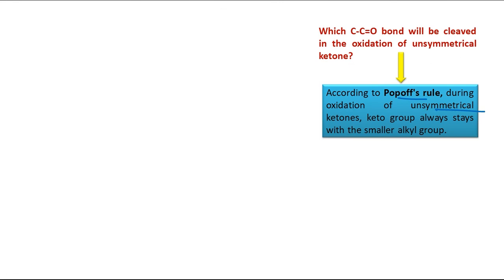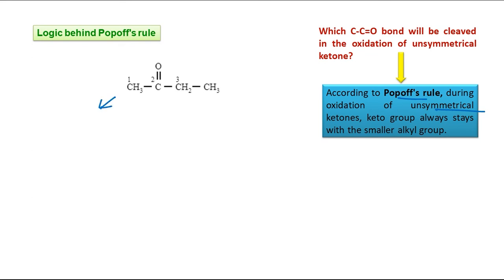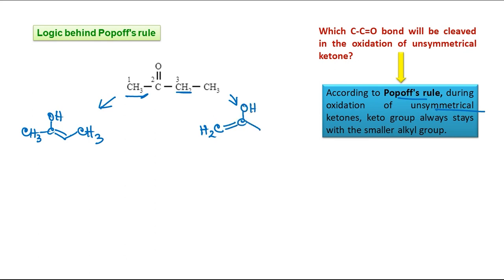But the next question is: what is the logic behind Popoff's rule? For the 2-3 bond cleavage, first you write the enol structure. Considering the two alpha hydrogens, the enol formed is CH3C(OH)=CH-CH3. For the other possibility, if the methyl group's hydrogens take part in enolization, you get CH2=C(OH)-CH2CH2. Among these two enols, the first one is more stable because the C=C bond obtained is more substituted.